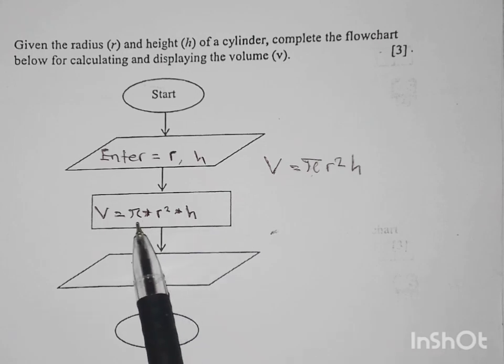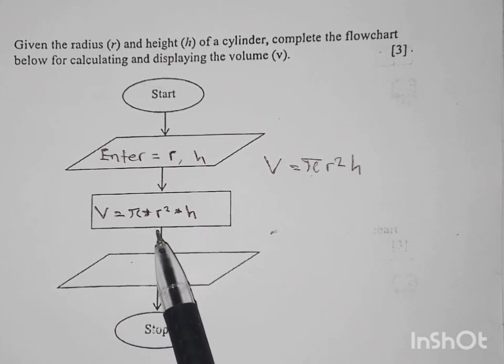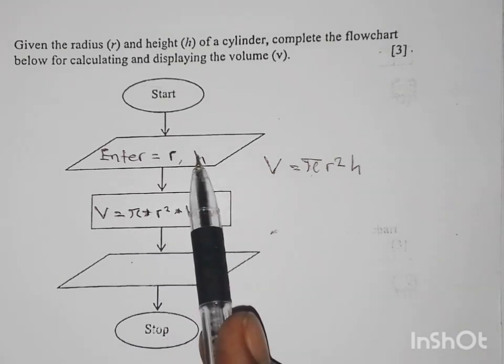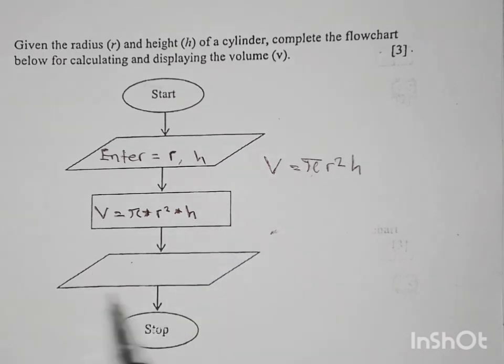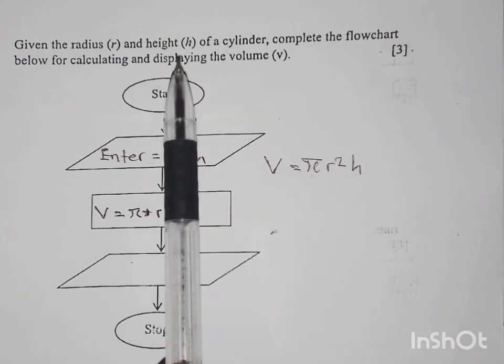So the star represents multiplication only on the computer. Then in the last one, which is also a parallelogram, remember I said the first one you enter which is for input, then the last one is for output. So your output is what you are displaying.